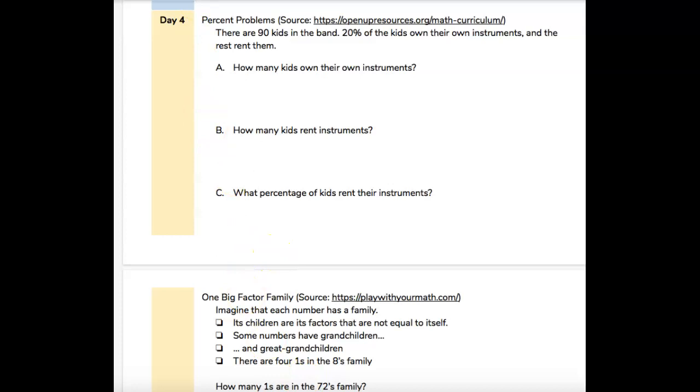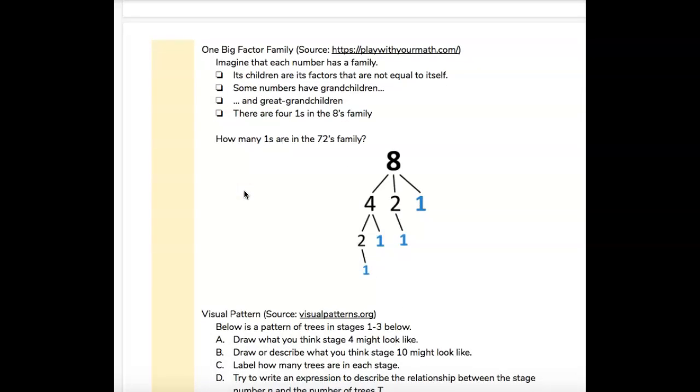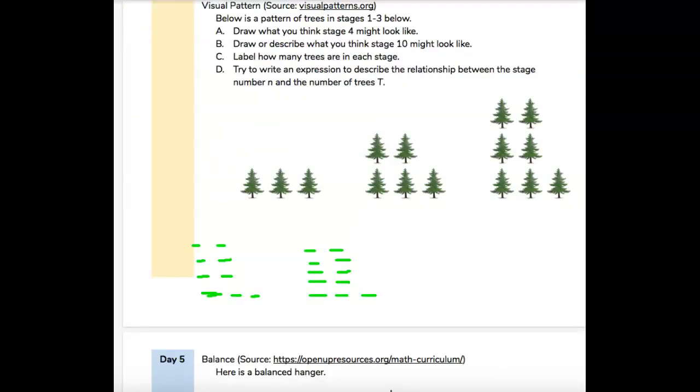All right, we're going to move the paper up now to the next one. So let's look. One big factor family. Oh, that's what it's called, one big factor family. Imagine that each number has a family. Its children are its factors that are not equal to itself. Some numbers have grandchildren and great-grandchildren. There are four ones in the eighth family. How many ones are in the 72's family? Okay, guys, I'm going to skip that previous problem about the factor family for right now. I'm going to have to consult with Mr. Gregory on that one, because that one doesn't make a lot of sense to me. But I will get back with you on that one.